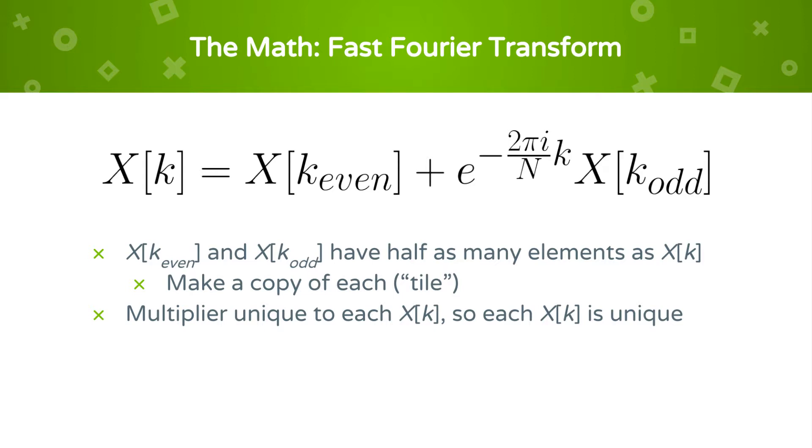Thus, we need to make a copy of each of the even components and odd components to make up for the reduction in size. The multipliers, however, are unique to each x of k. Thus, each x of k is unique.